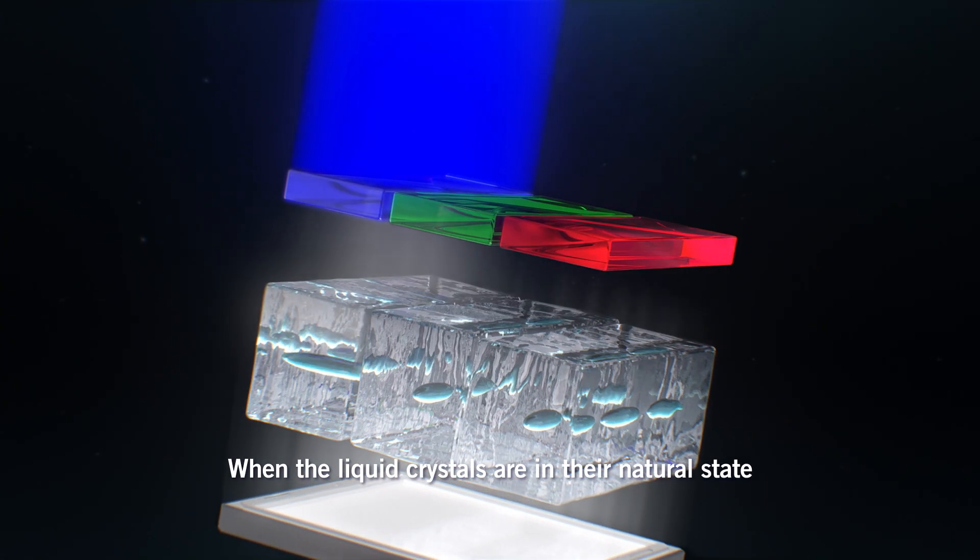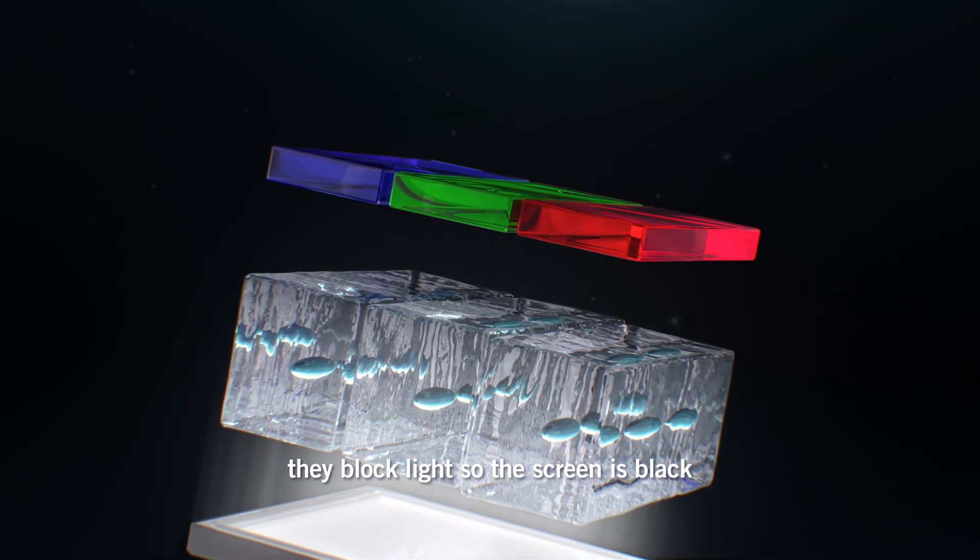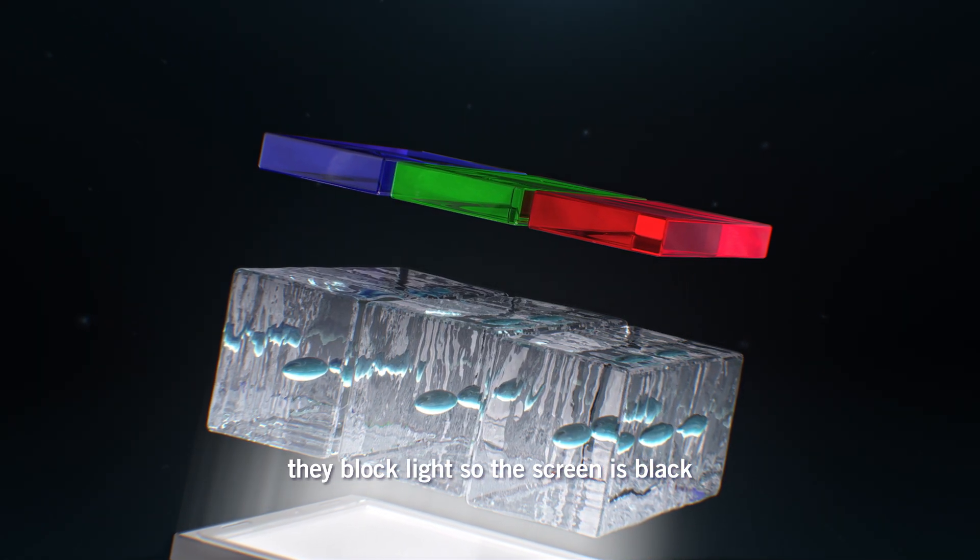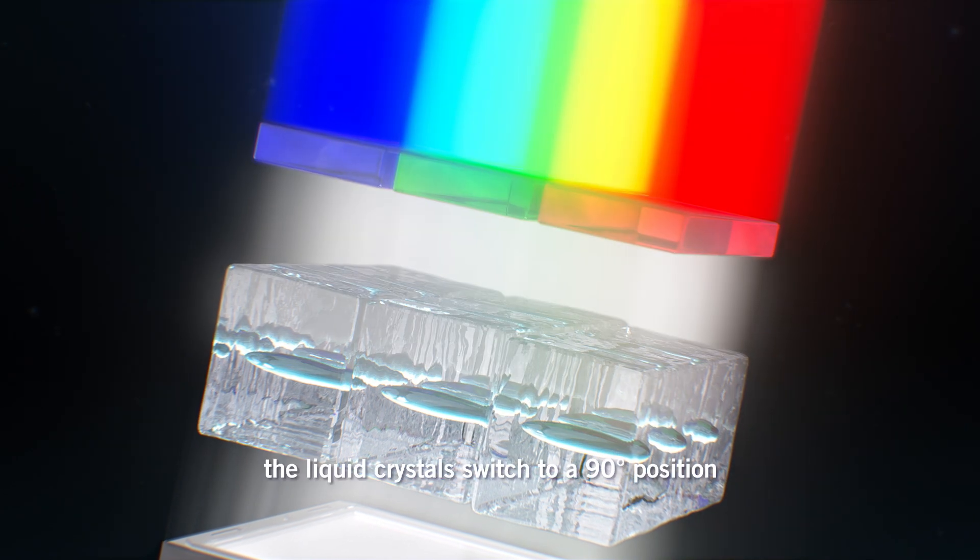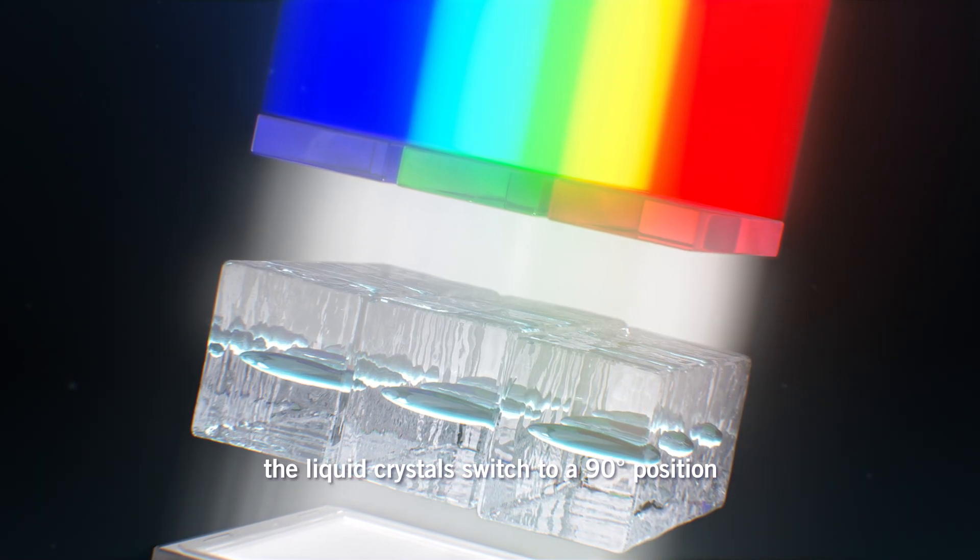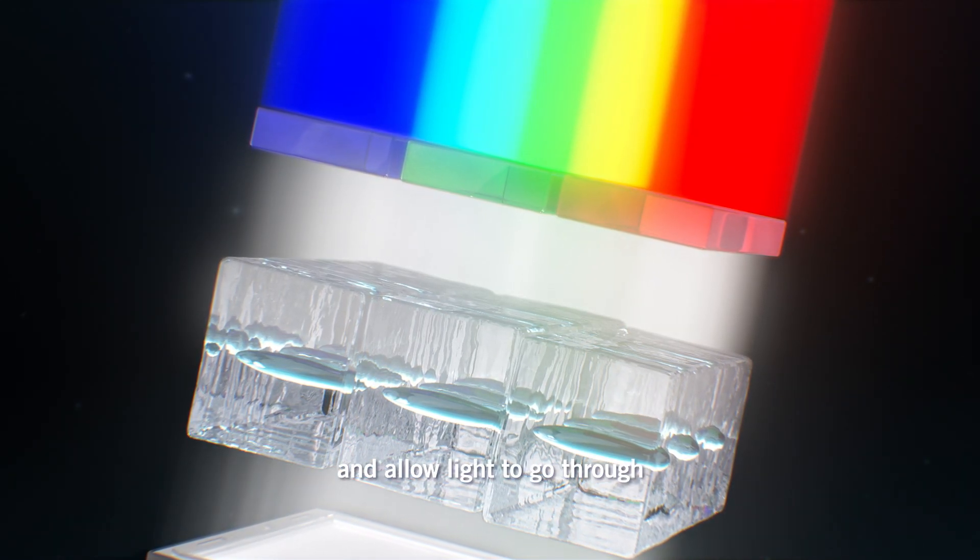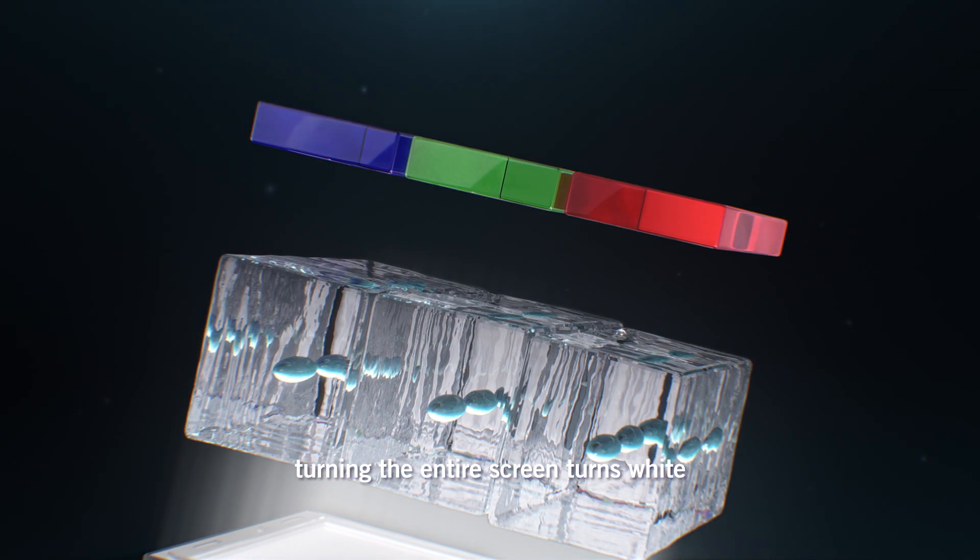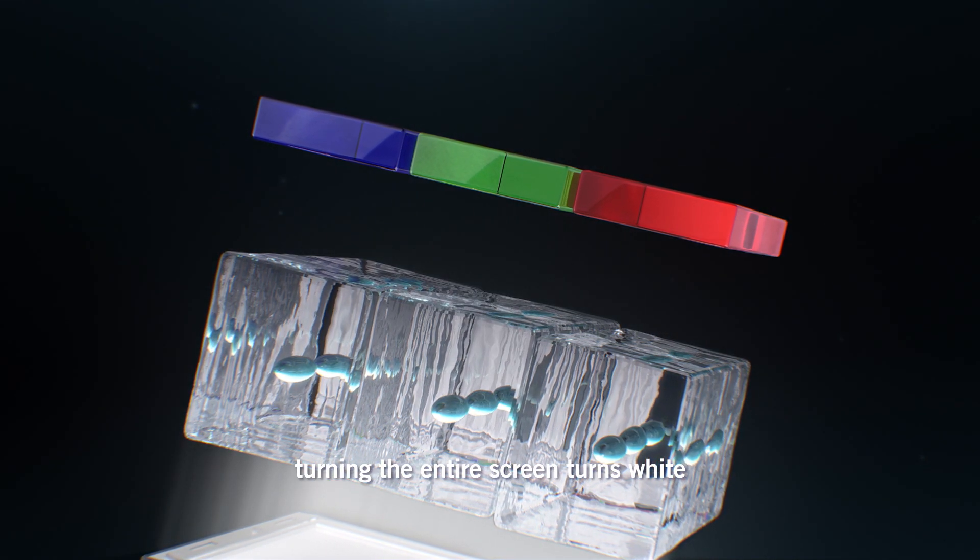When the liquid crystals are in their natural state, they block light so the screen is black. When voltage is applied, the liquid crystals switch to a 90-degree position and allow the light to go through, turning the entire screen white.